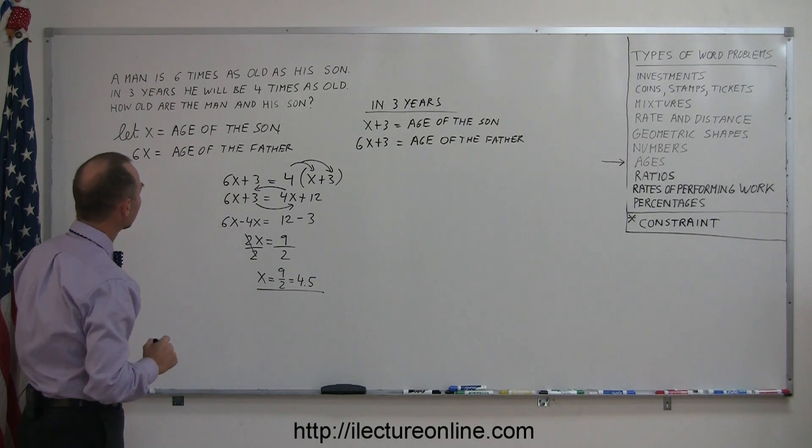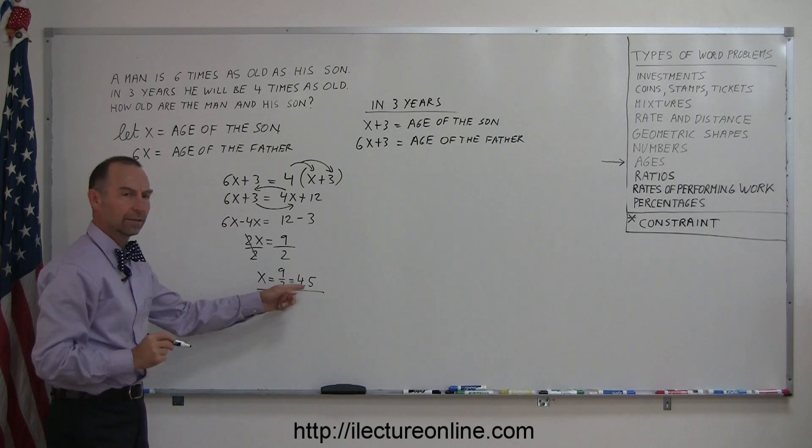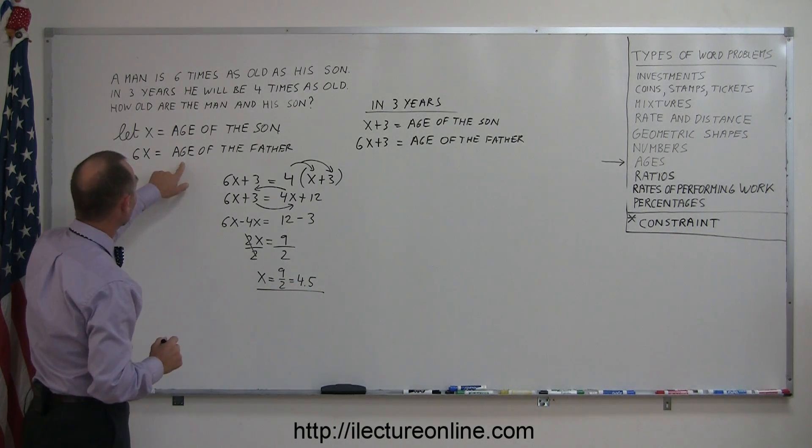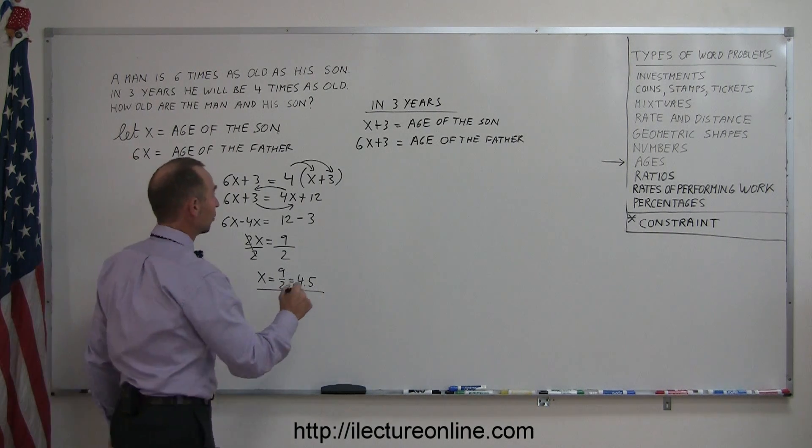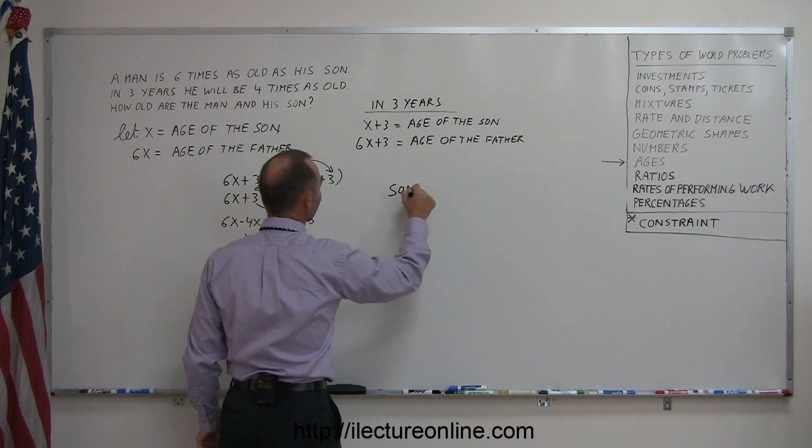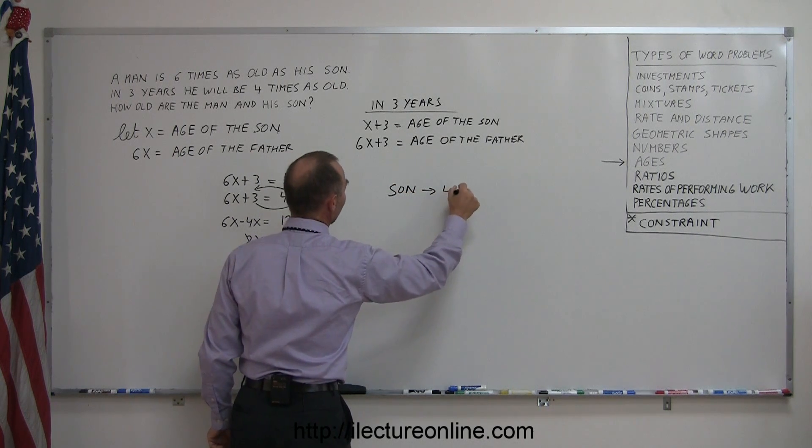So how old is the son? The son is four and a half years old. How old is the father? Six times as much. So we can say son, 4.5 years.